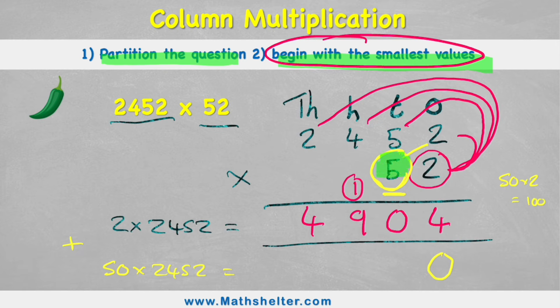So whenever we come into this column where this 5 is, I need to remember it's actually a 50. And I can do that by adding the 0 into the ones column. Hopefully that makes a bit of sense. Now I can just do 5 times 2 again, put my answer 10, and now I'm ready to carry on.